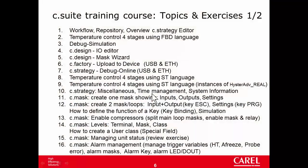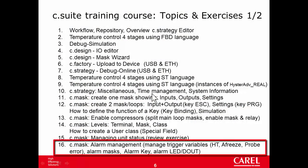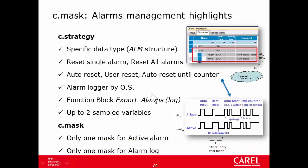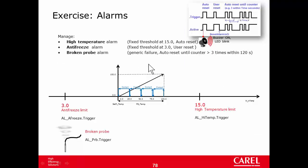In the last part of this very long tutorial, we are ready to manage alarms from the practical point of view. Since there are three types of reset — auto reset, user reset, and with the counter — we can manage three alarms, one for each type. We can manage the high temperature alarm with the auto reset, antifreeze with the user reset, and broken probe with the counter.